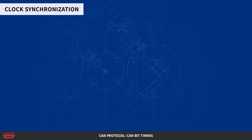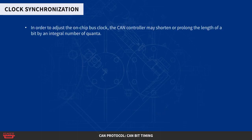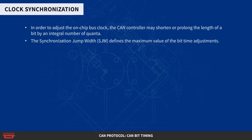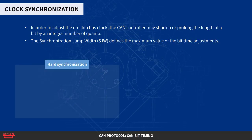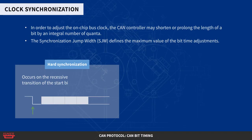Clock synchronization. In order to adjust the on-chip bus clock, the CAN controller may shorten or prolong the length of a bit by an integral number of quanta. The maximum value of these bit time adjustments are termed the synchronization jump width, or SJW. Hard synchronization occurs on the recessive to dominant transition of the start bit, and the bit time is restarted from that edge.